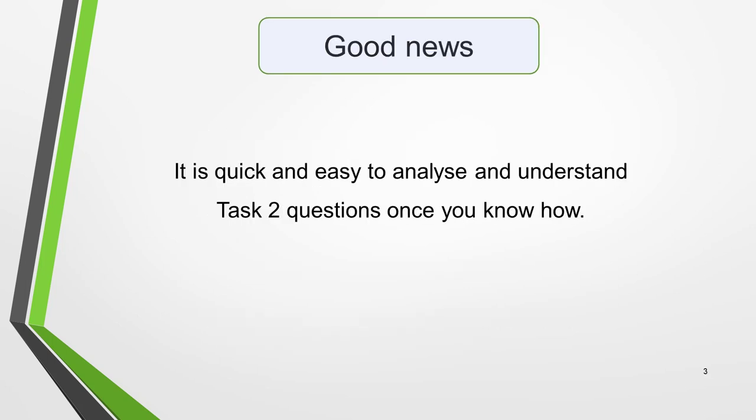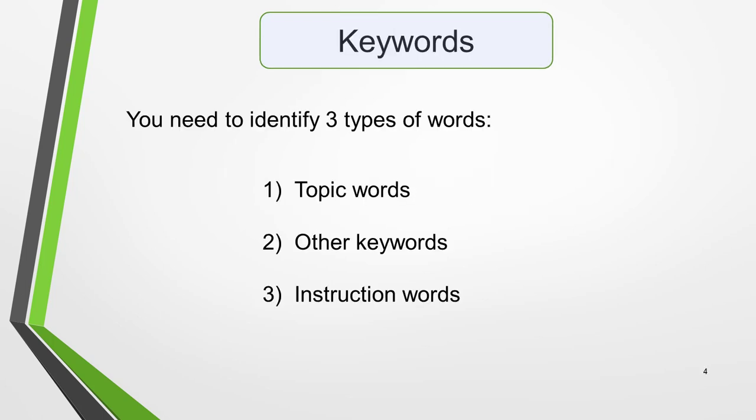The good news is it's quick and easy to analyze and understand Task 2 questions once you know how. You just need to identify three different types of words: topic words, other keywords, and instruction words. I'll show you how.